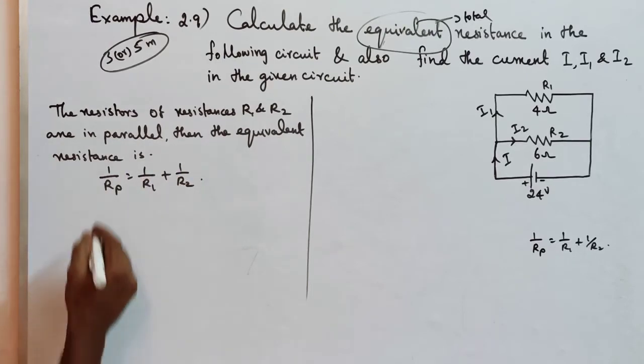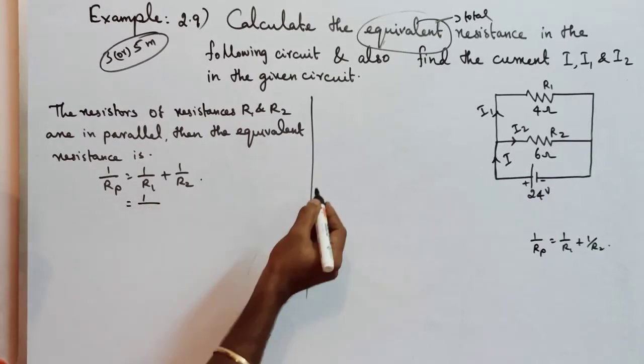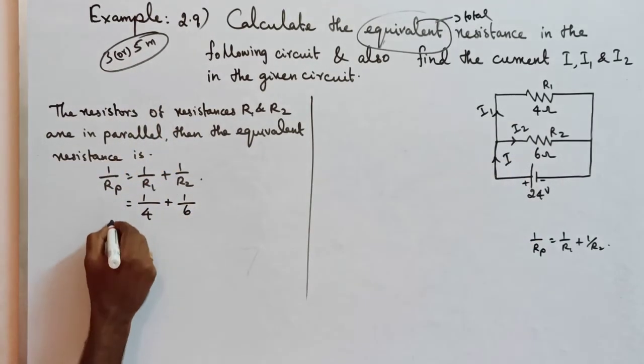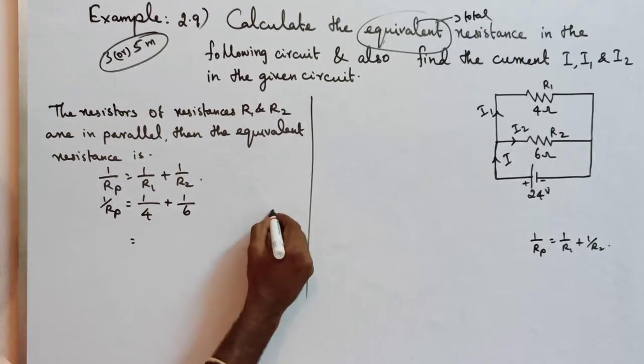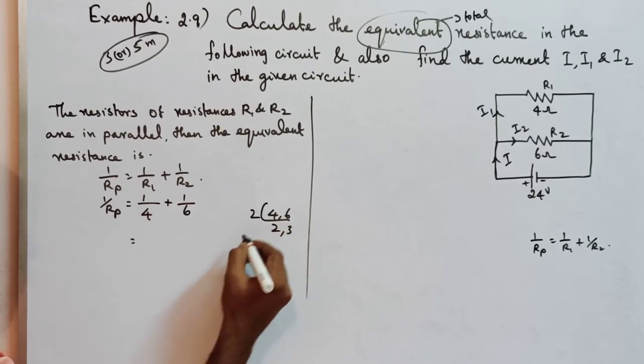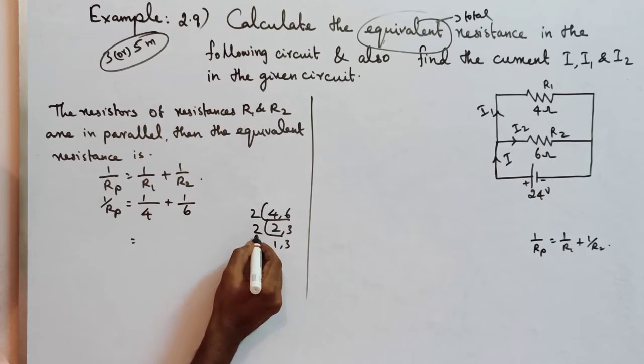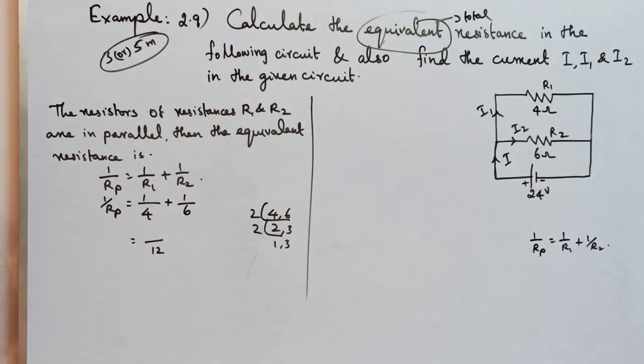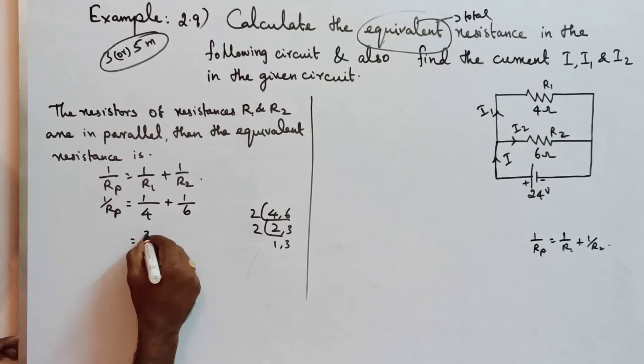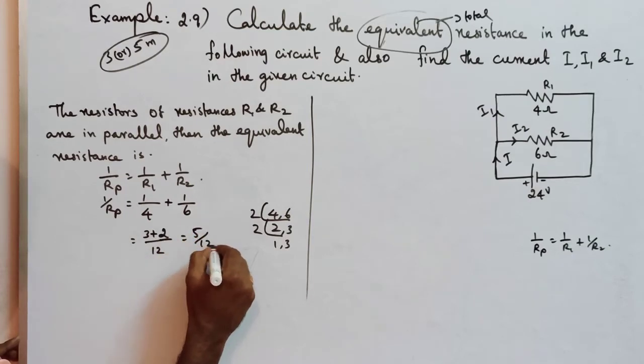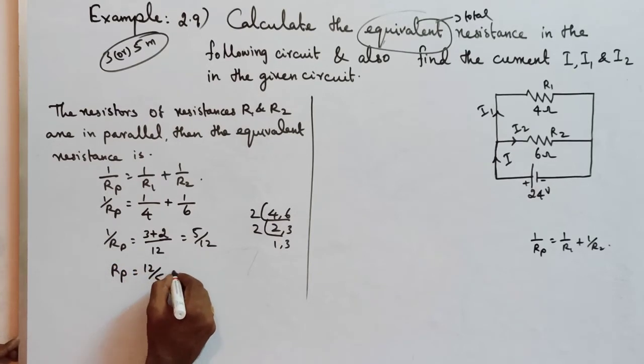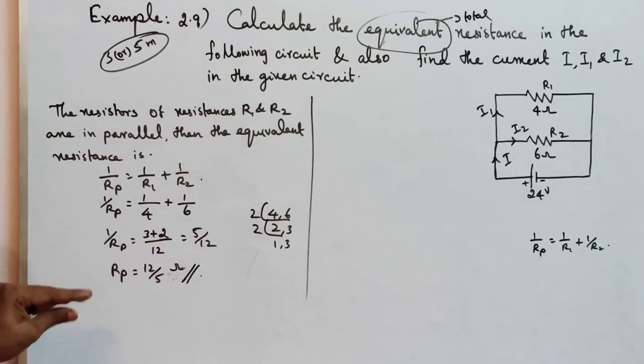If I substitute, which is equal to 1 by R1, R1 value 4 Ohm, plus 1 by R2 that is 6. Then 1 by RP is equal to LCM is 12. So denominator 12, numerators are 3 plus 2, so 5 by 12. This is 1 by RP. Then from this, reciprocal of 1 by RP, that means RP is equal to 12 by 5 Ohm. This is the first part.